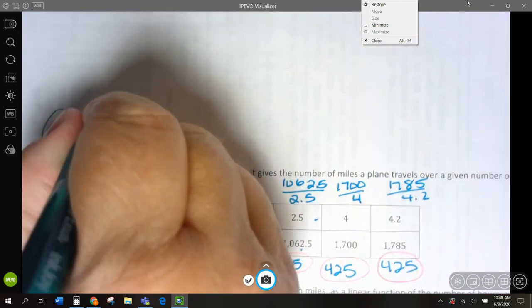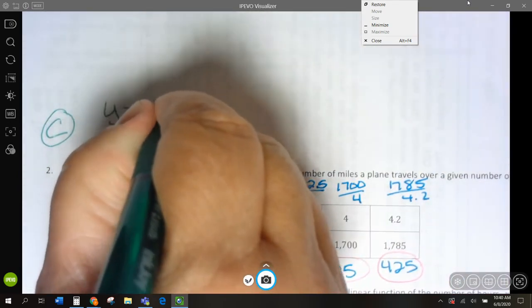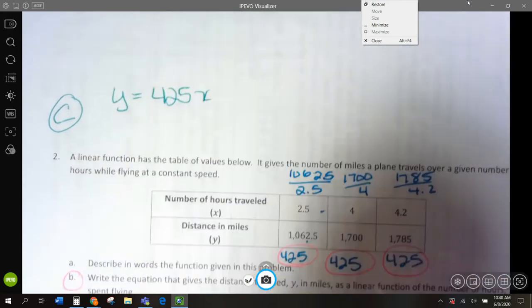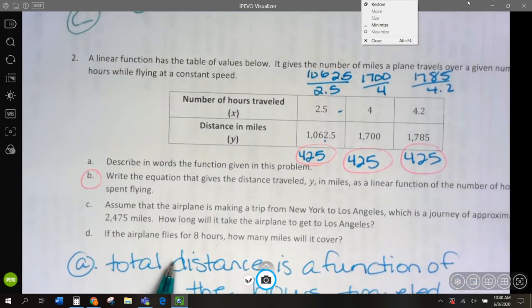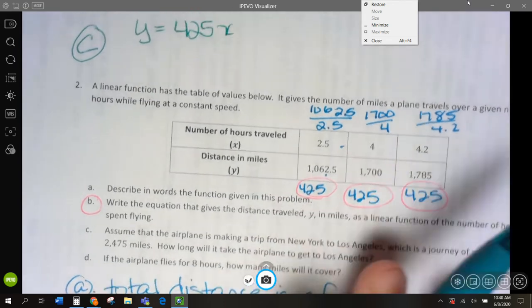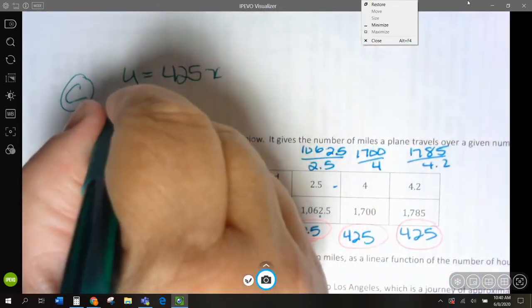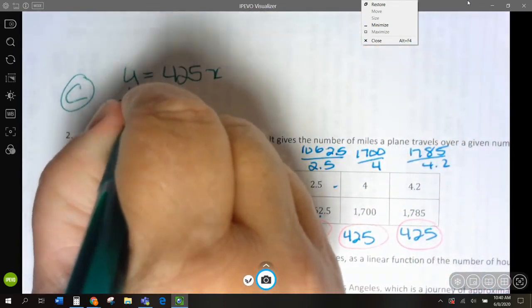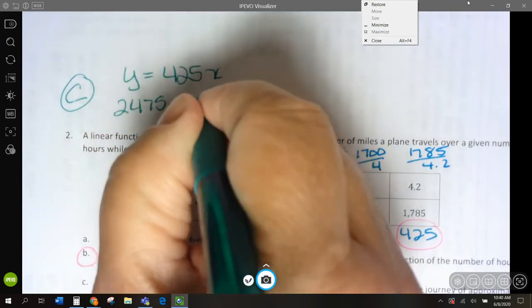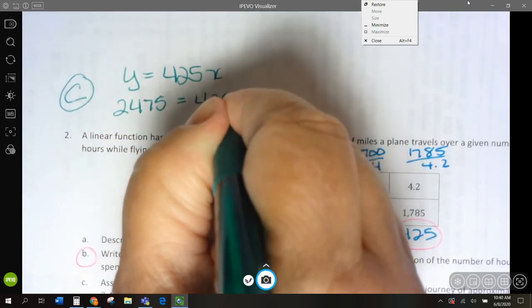So, we have y equals 425x, and we want to know how long it's going to take if y is 2,475. Our total miles is 2,475, and so how many hours is that going to be?